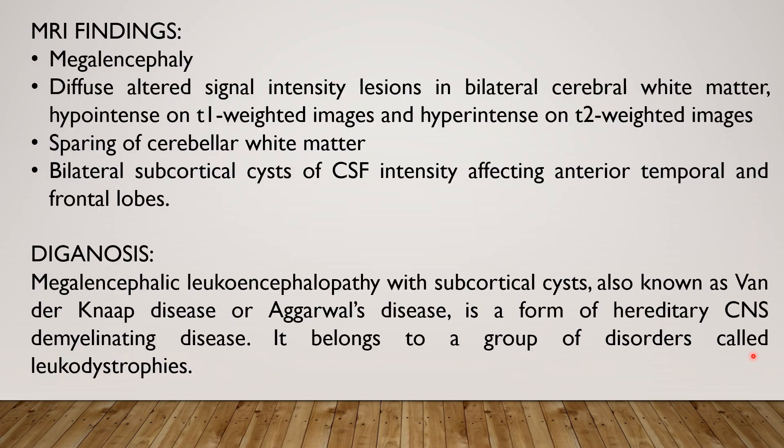To summarize the findings: there is megalencephaly; there are diffuse altered signal intensity lesions in bilateral cerebral white matter, which are hypointense on T1-weighted images and hyperintense on T2 and FLAIR images; there is sparing of cerebellar white matter; and there are bilateral subcortical cysts of CSF intensity affecting the anterior temporal and frontal lobes.